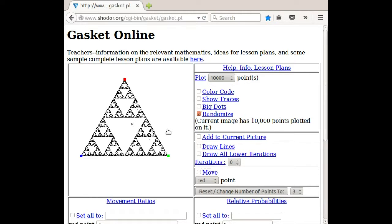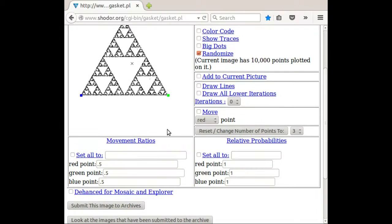So there's some things that we can change down below. One is we can change the movement ratios. Right now this says red point 0.5, that means you move halfway to the red point. This 0.5 means you move halfway to the green point, halfway to the blue point.